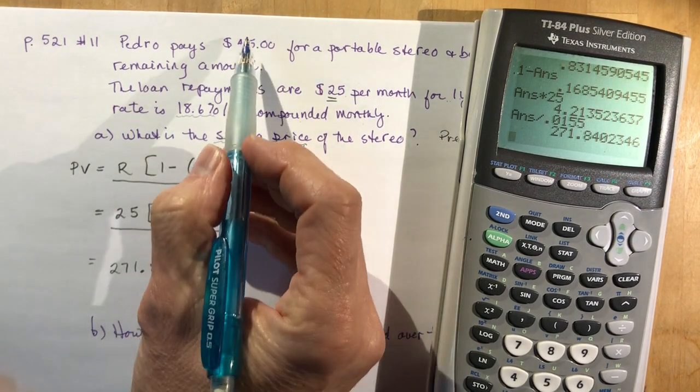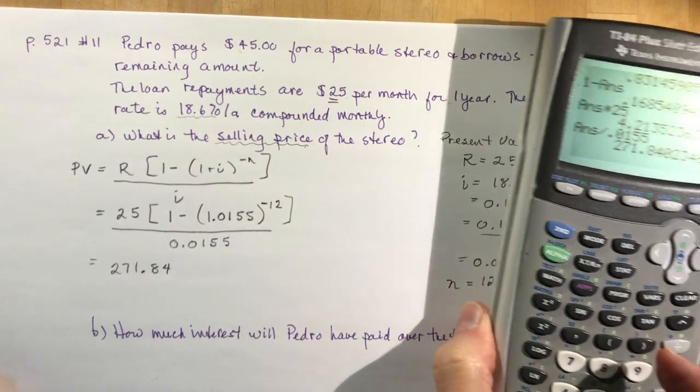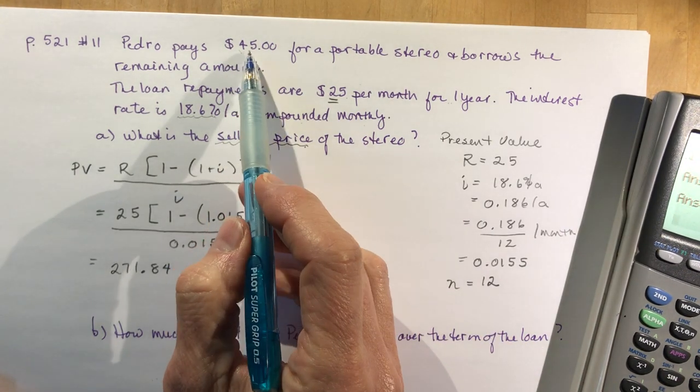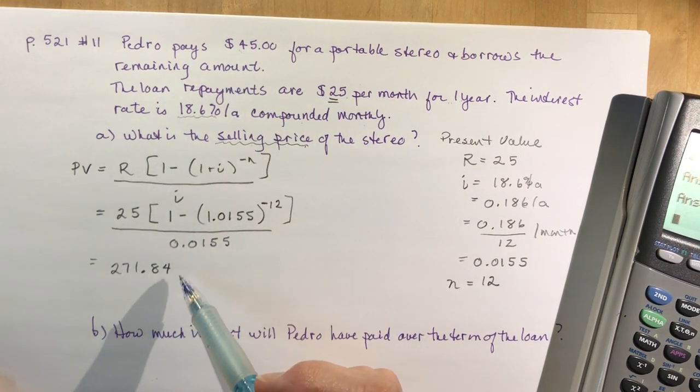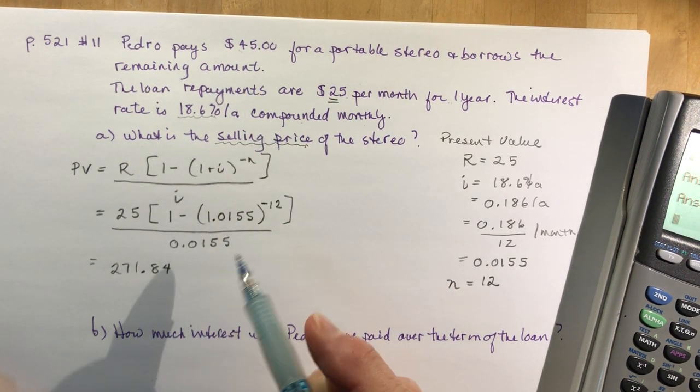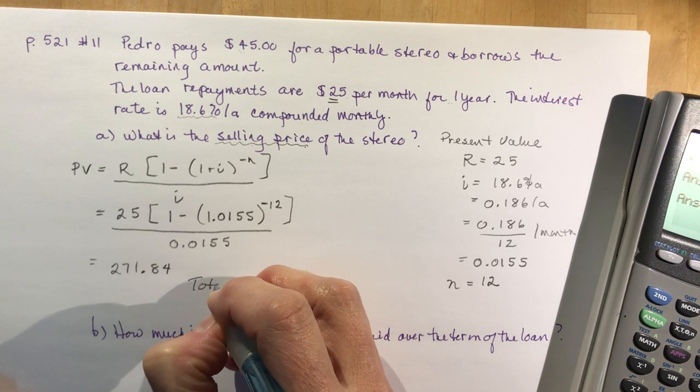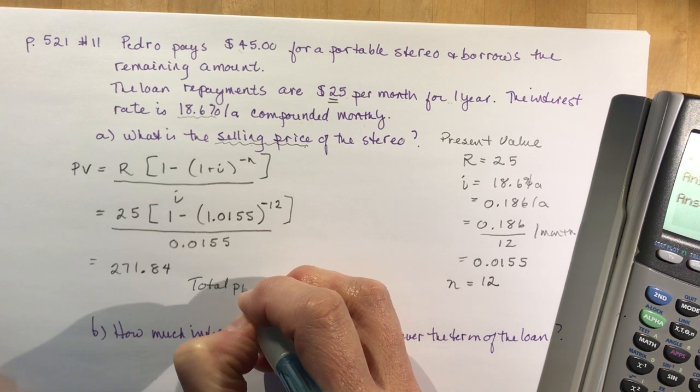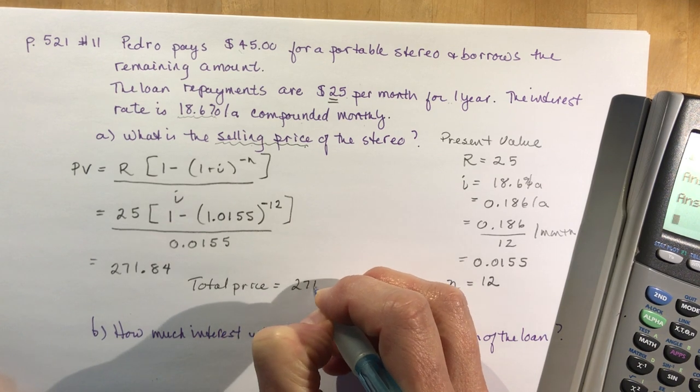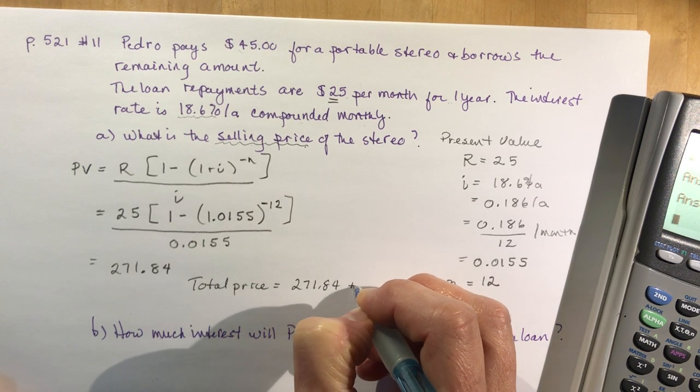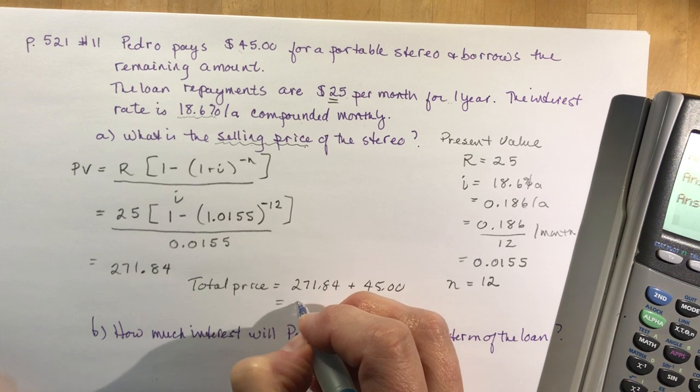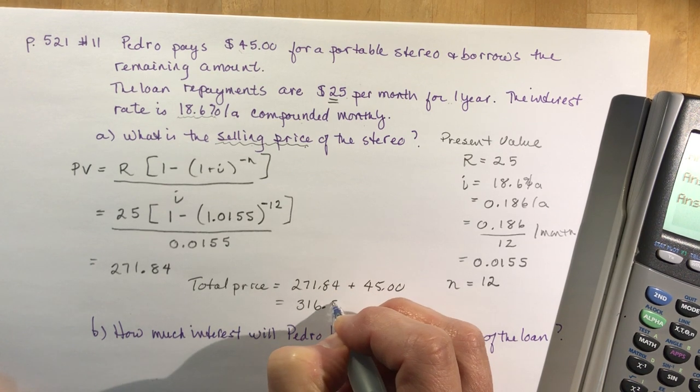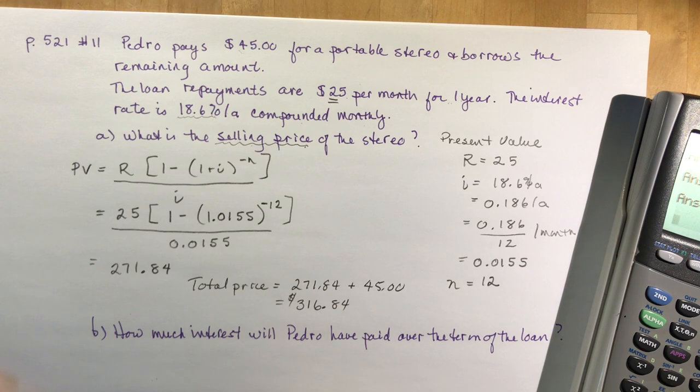So what am I going to do with this $45? You should know what to do with that because he paid $45, that's like his down payment, right? He put a down payment of 45 and he paid the rest monthly. So the total price would be 271.84 plus $45. So just add 45 here and we get $316.84.